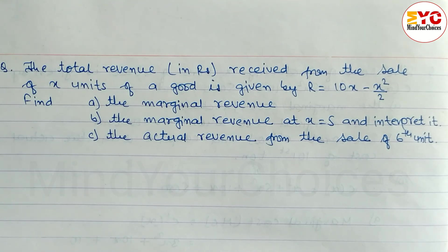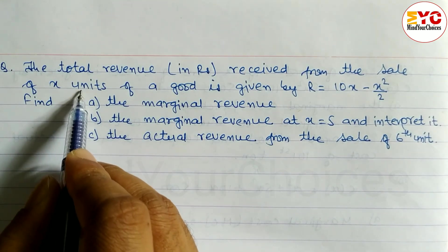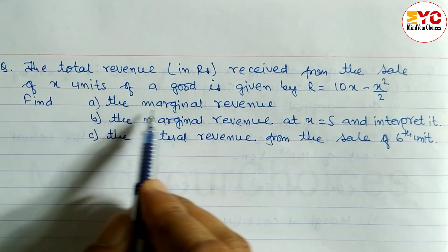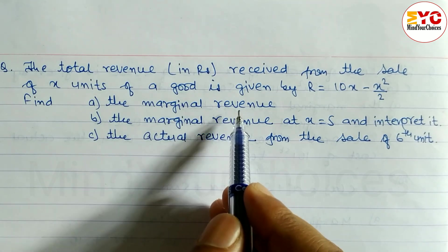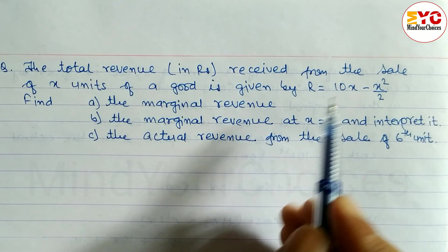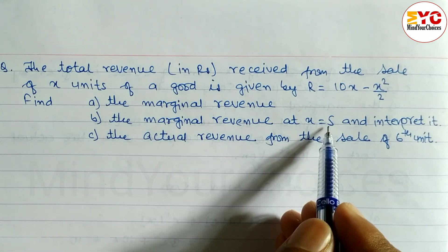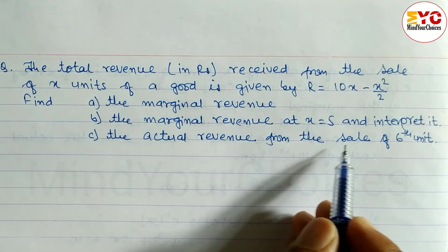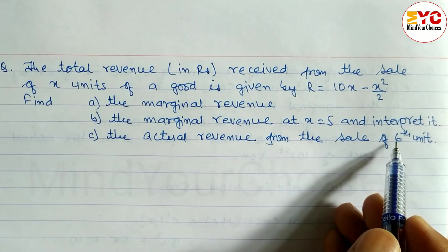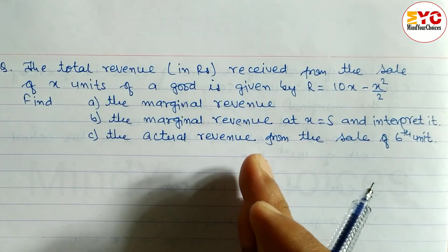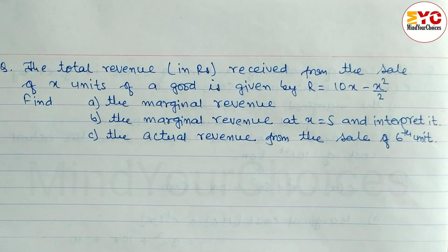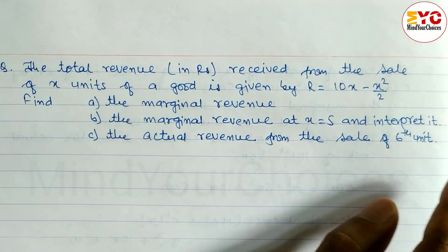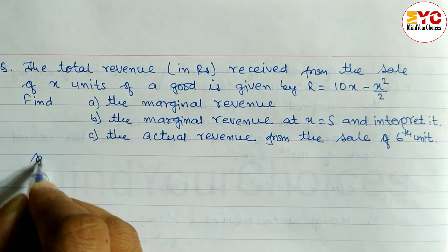The next question: the total revenue in rupees received from the sales of x units is R(x) equal to 10x minus x squared by 2. We need to find the marginal revenue, then marginal revenue at x equal to 5, and for part c, the actual revenue of the 6th unit by calculating R(6) minus R(5). So let's take a start here.